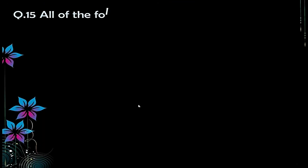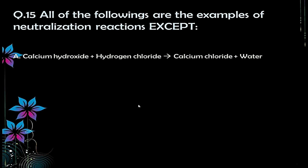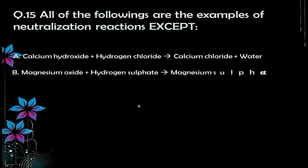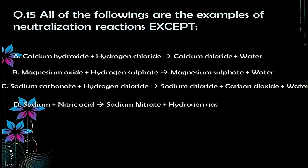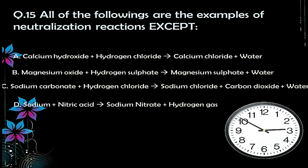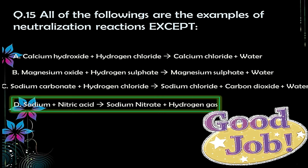Question number fifteen: all of the following are examples of neutralization reactions except — A) Ca(OH)₂ + HCl → CaCl₂ + H₂O, B) MgO + H₂SO₄ → MgSO₄ + H₂O, C) Na₂CO₃ + HCl → NaCl + CO₂ + H₂O, D) Na + HNO₃ → NaNO₃ + H₂. The correct answer is option D — because this is not a neutralization reaction; here acid is reacting with the metal sodium, not with a base.